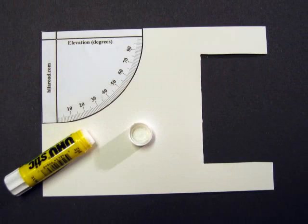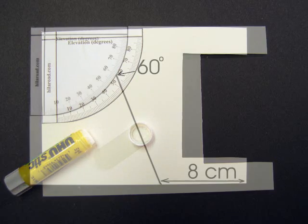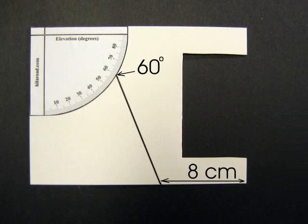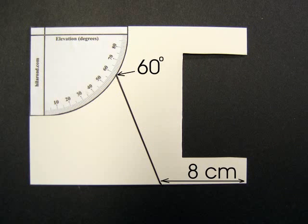Glue this scale in place as shown. Next create this line. It starts at the 60 degree location on the elevation scale and ends 8 centimeters along the base.